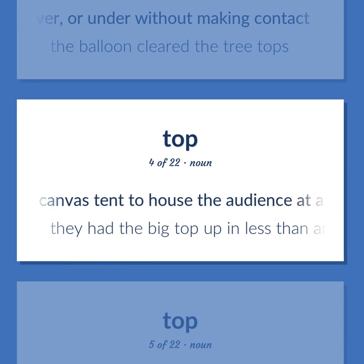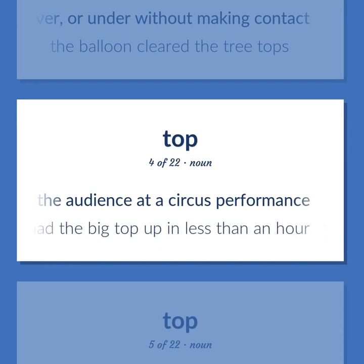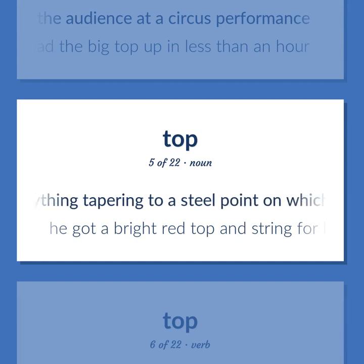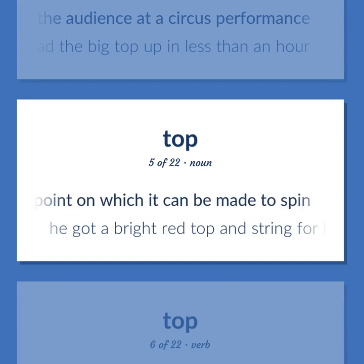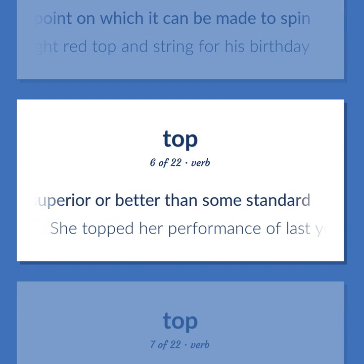Top: a canvas tent to house the audience at a circus performance. Example: they had the big top up in less than an hour. Also: a conical child's plaything tapering to a steel point on which it can be made to spin. Example: he got a bright red top and string for his birthday. Also: to be superior or better than some standard. Example: she topped her performance of last year.